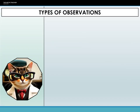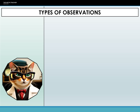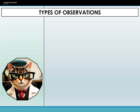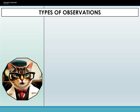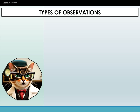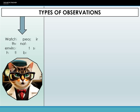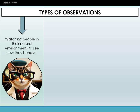In the realm of sociological research, observations provide us a special lens to peer into the intricacies of human behavior. Observations let us watch participants in their natural settings, which often provides rich and genuine data, enhancing the study's validity.